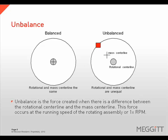Unbalance is the force generated when a difference between a rotational center line and a mass center line exists. This force occurs at running speed of the rotating assembly, or 1 times RPM. The vibration amplitude due to imbalance will increase by the square of the speed. If you double the speed of the rotor, the vibration amplitude due to unbalance will increase by a factor of 4.